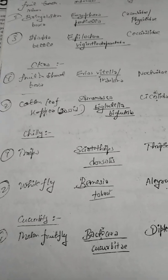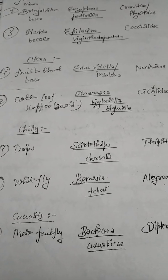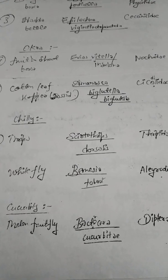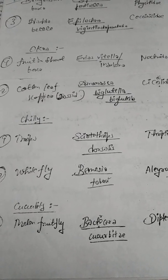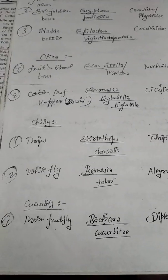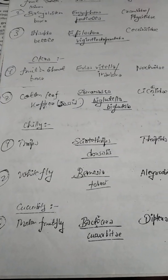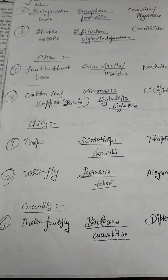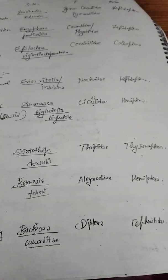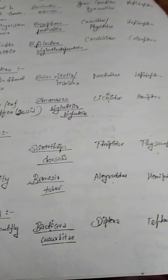Students, remember about chili also. Chili thrips is Scirtothrips dorsalis, family Thripidae, order Thysanoptera. White fly is Bemisia tabaci, family Aleyrodidae, order Hemiptera. For cucurbits, remember melon fruit fly is Bactrocera cucurbitae, order Diptera, family Tephritidae.